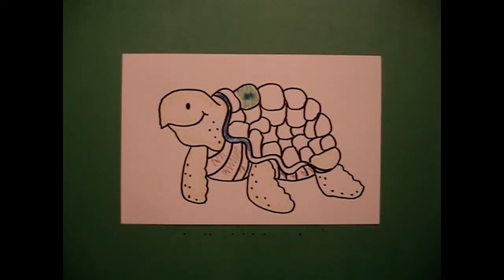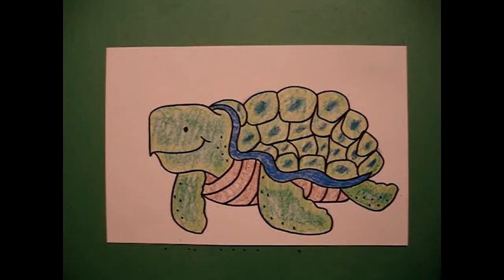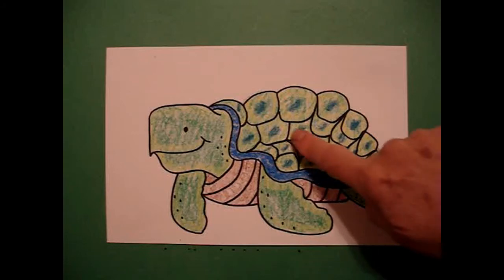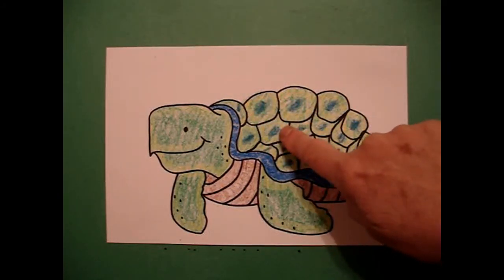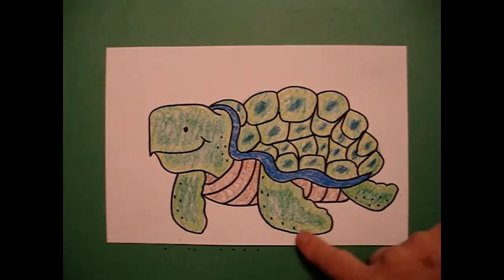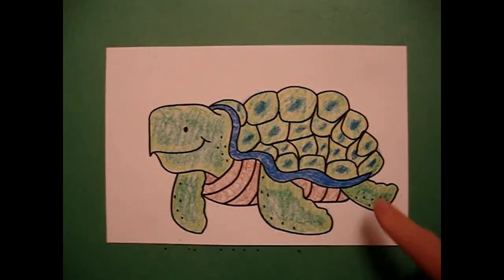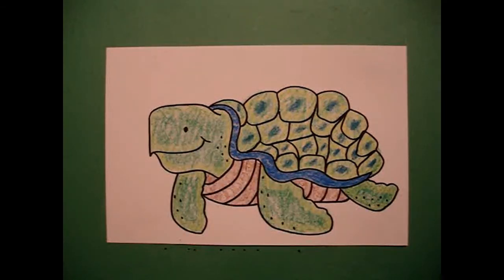Okay, let's see what it looks like all colored in. Here's my sea turtle all colored in. Then you can see how the shading of the dark green with the dark blue and the light green comes out and really kind of gives him a little extra punch. And he's all ready to go swimming.